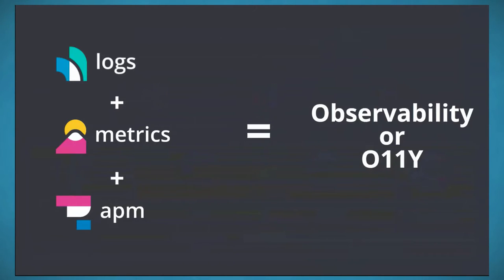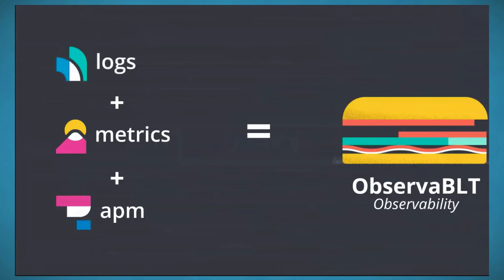The three pillars of observability are logs, metrics, and application performance data. At Elastic, we bring these together into what we call the observability sandwich — logs, metrics, and APM — giving you a unified view of what's happening in your environment, including your networking environment.